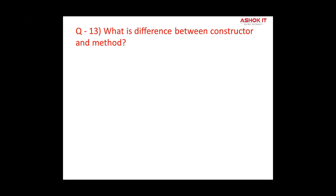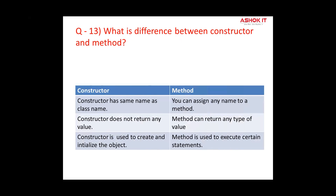Question thirteen: What is the difference between constructor and method? Constructors have the same name as the class name, where a method can have any name. Constructors do not have a return type, but a method can have any return type. Constructors are used for initializing objects, where methods are mainly used to reuse code. Constructors are implicitly invoked by the system, and the new keyword plays an important role in invoking the constructor, where method calls are made by the programmer.